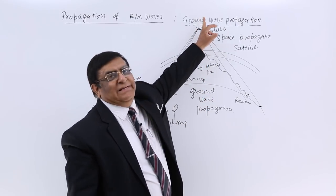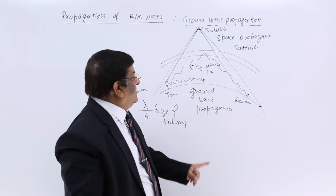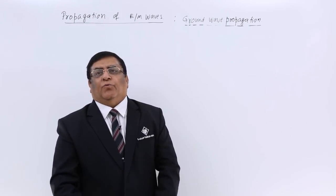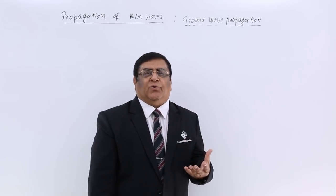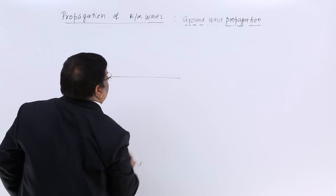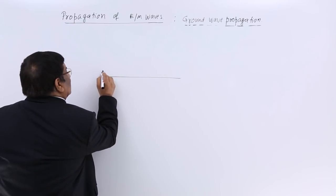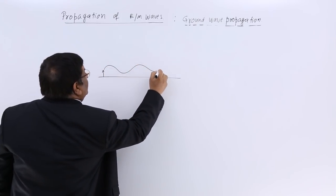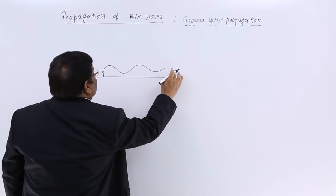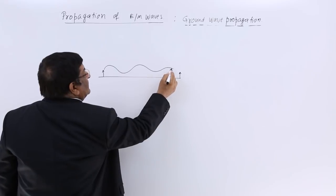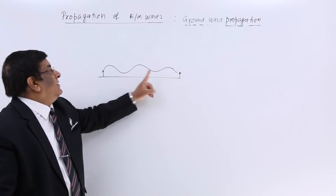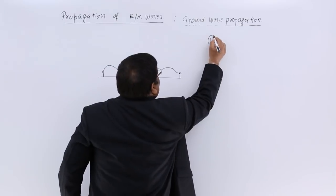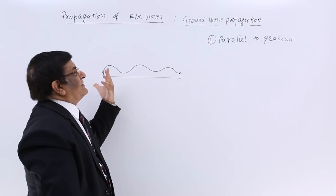We have to study these three one after the other. First, we will start with ground wave propagation. Ground wave propagation is used for low frequency. One antenna on the surface transmits electromagnetic waves, and another antenna receives them. These waves are parallel to the ground.